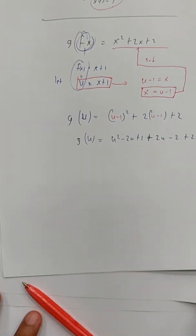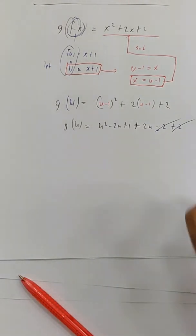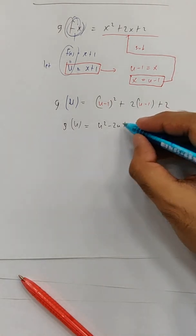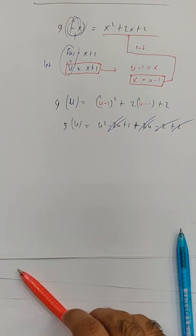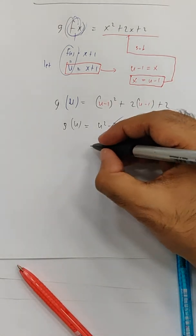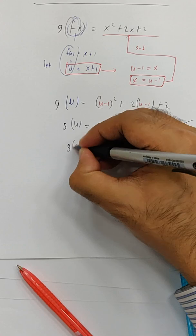Sorry about that. So now minus 2 plus 2, minus 2U plus 2U. U squared plus 1. Are you okay?